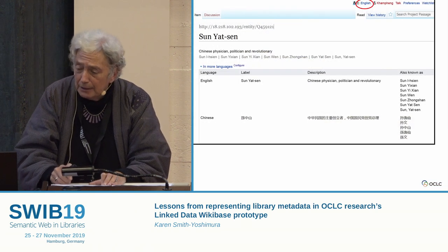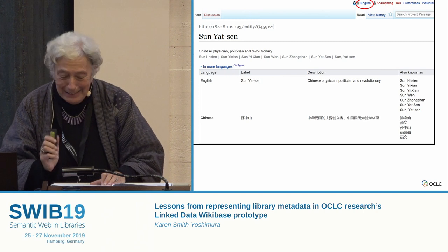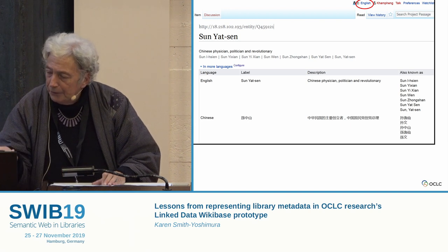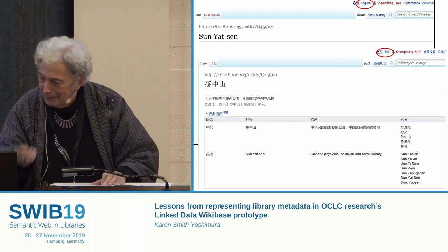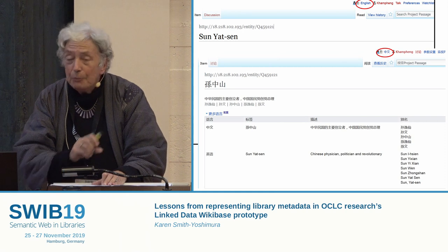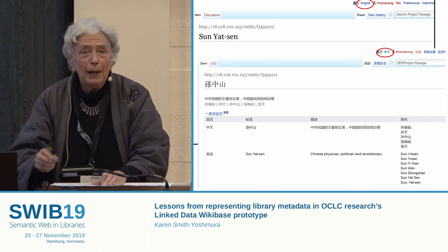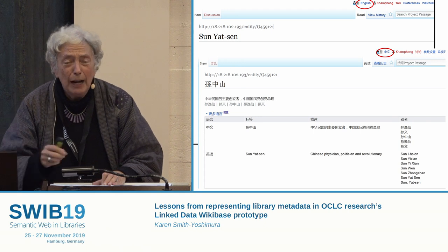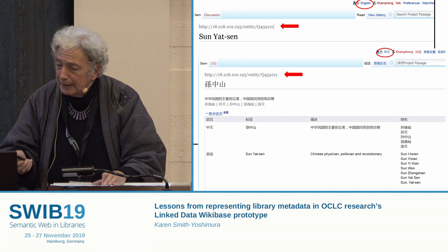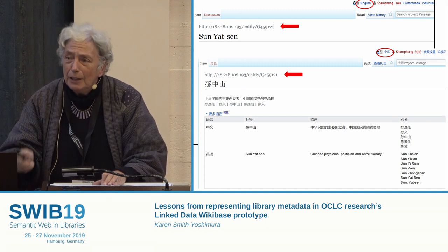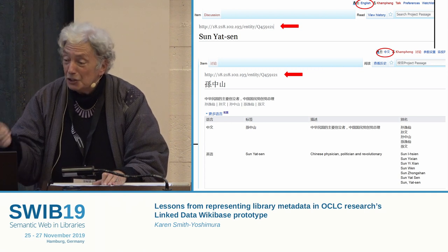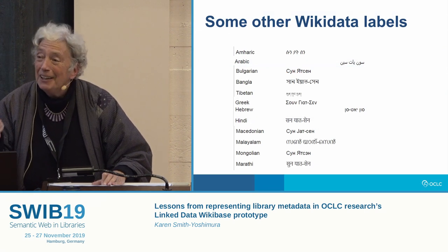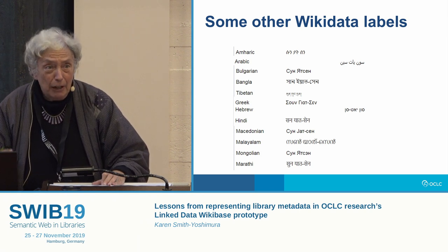Sun Yat-sen is an example where the same entity with the same identifier can be edited and displayed in different languages and writing systems. This is the interface with English, and there's the one with Chinese. Different people with different language skills can just enter the data in their own writing systems, not worrying about how it might be transliterated or shown in different writing systems. And because it has the same identifier, that one identifier can be linked to either the Chinese or the English.